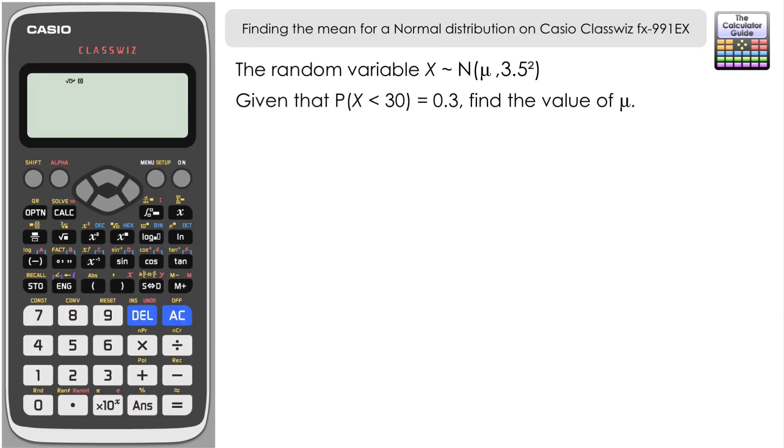We have the random variable X which is distributed normally with a mean of μ, unknown at this time, and a standard deviation of 3.5. Given that the probability that X is less than 30 equals 0.3, we have to find the value of μ. So find the value of the mean in this particular case.